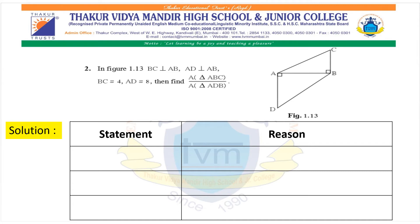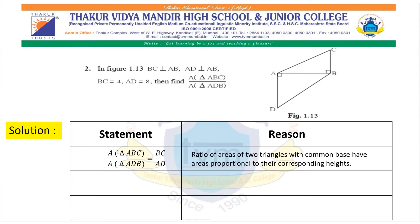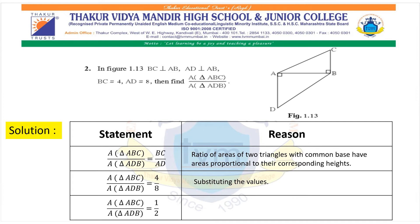Now we know which property to use. Let us solve the sum. Triangle ABC and triangle ADB have a common base, so the ratio of their areas equals BC upon AD. For triangle ABC, BC is the height, and for triangle ADB, AD is the height. So the ratio equals 4 upon 8, since BC is given as 4 and AD is 8. That means the area of triangle ABC upon area of triangle ADB equals 1 upon 2. That is your final answer.